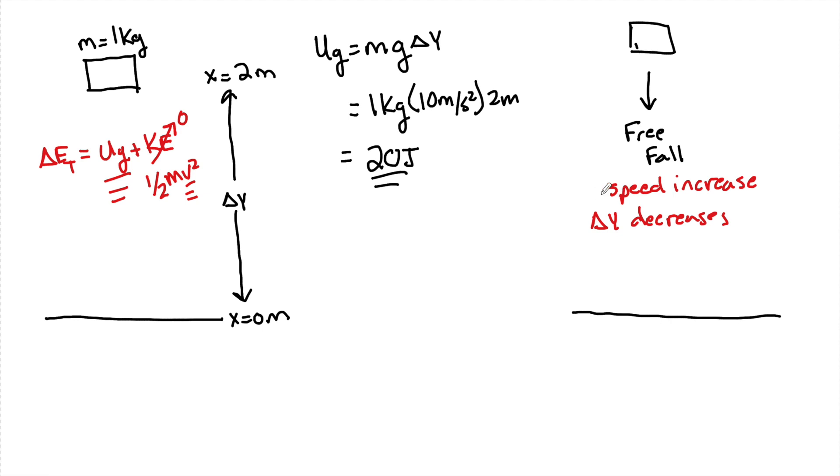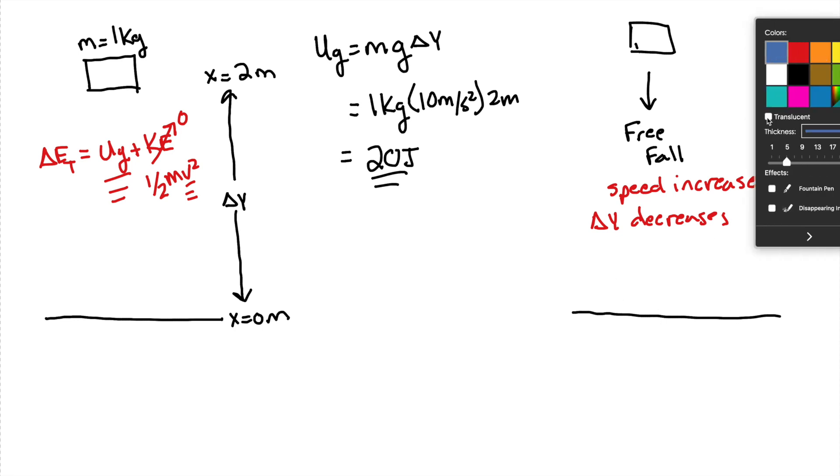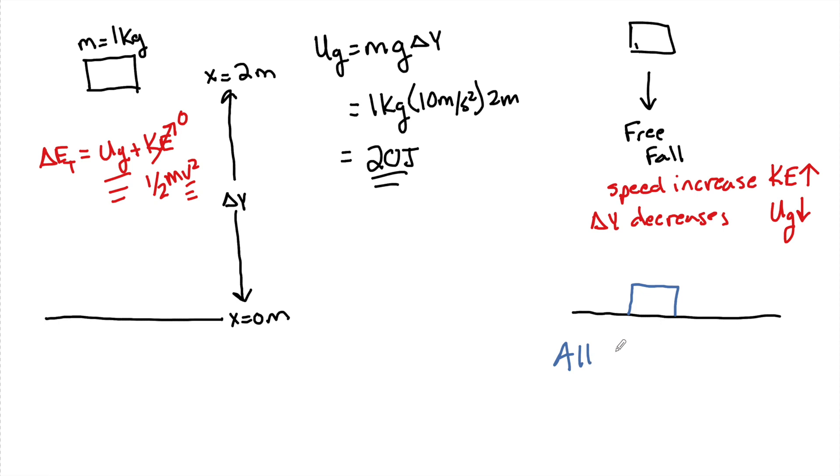So essentially, what we're going to have is, as speed increases, KE has to go up. And UG, because height decreases, has to go down. And just before this object hits the ground right here, the instant before it hits the ground, we'll say that all of the UG gets converted into KE. And this allows us to solve for things like the speed just before it hits.